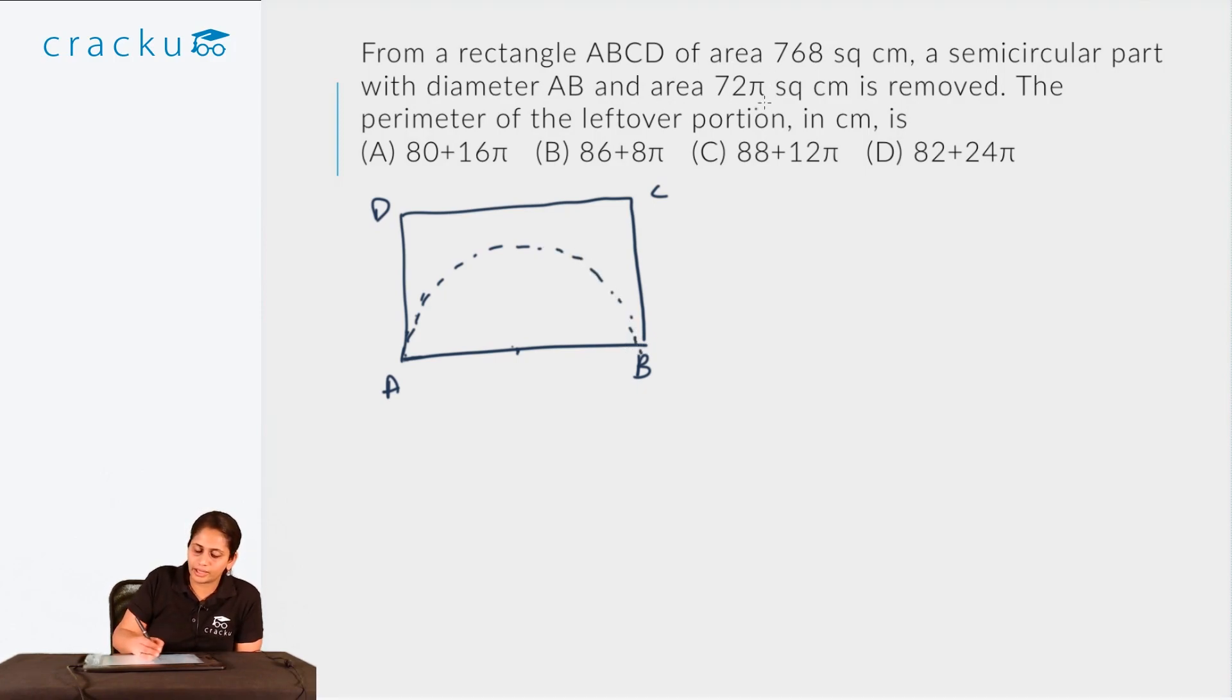Since the area of the semicircle is much lesser than the area of the rectangle, it won't cross the other side as such. Because this would be something like three times, so this is less than 300 essentially. So this will not cross over to the other side. Now this is the configuration. The diameter AB is—the area of the removed semicircle would be, so if the diameter is AB, the radius would be AB/2.